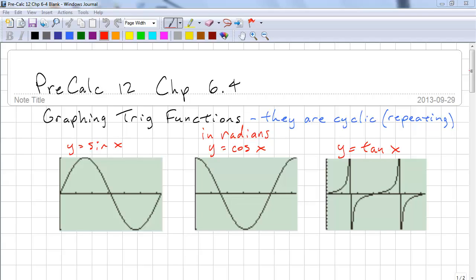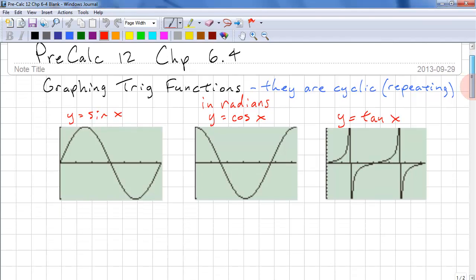Let's look at the three main trig functions: sine x, cosine x, and tangent x. These are in radians. We have pi, pi over 2, and 2pi.